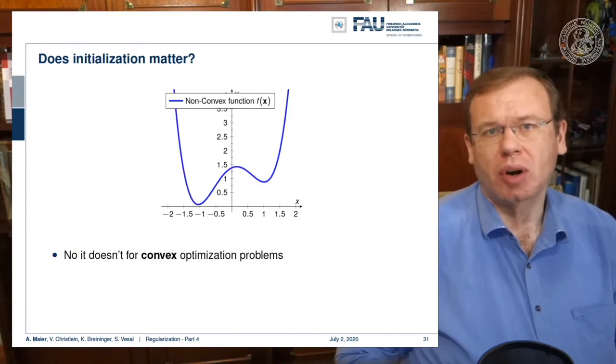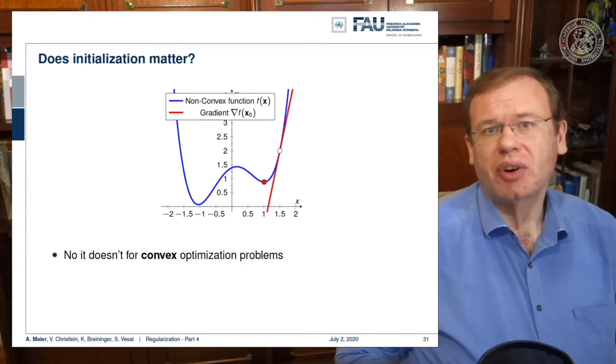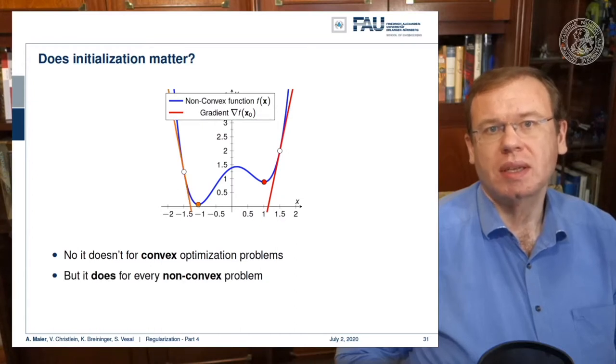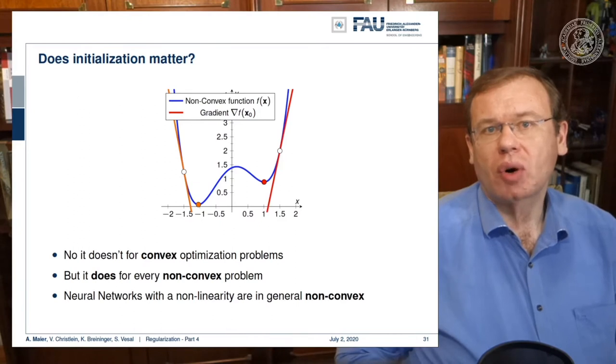However, many of the problems that we are dealing with are non-convex. A non-convex function may have different local minima. If I start at this point, you can see that I achieve one local minimum by the optimization. But if I were to start at this point, you can see that I would end up with a very different local minimum. So for non-convex problems, initialization is actually a big deal.